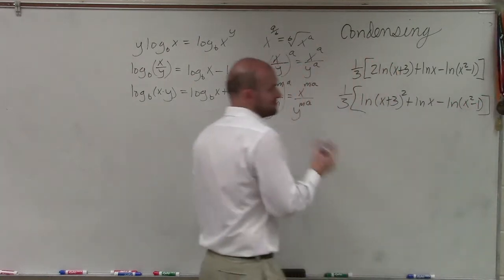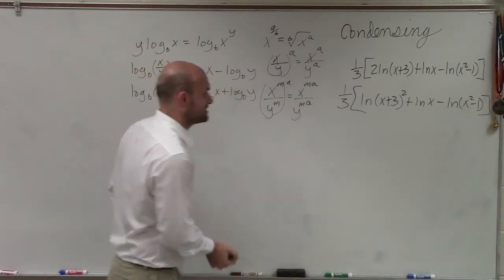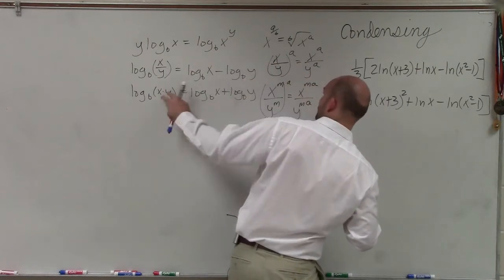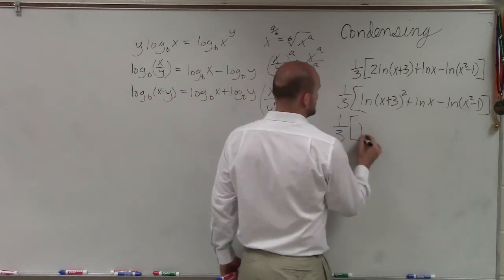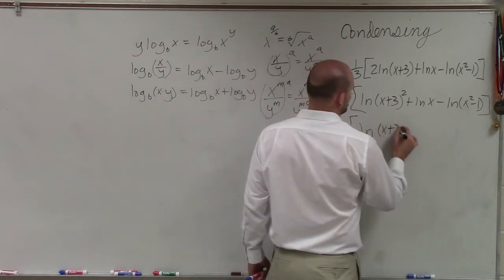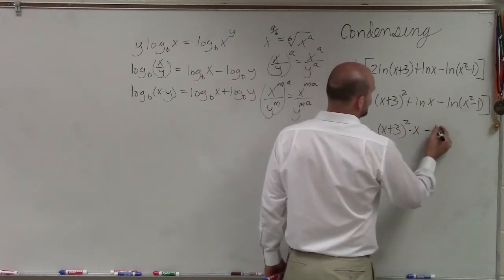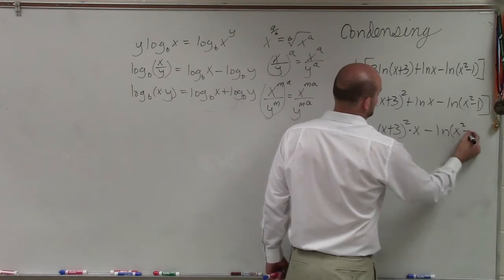The next thing is I'm just going to work from left to right inside my parentheses. So you can see here, I have the product. I can rewrite the sum as the product of one single logarithm. So it'll be ln[(x+3)² times x] minus ln(x²-1).